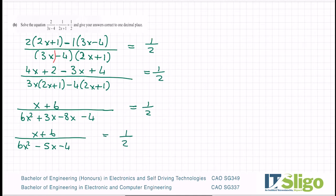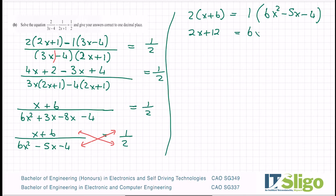So the left-hand side is in as simple form as it can get. So now I'm going to cross multiply. So cross multiplying means it's 2 by everything on the top this side. So it's 2 by the x plus 6 being equal to 1 times 6x squared minus 5x minus 4. So I have 2x plus 12 there equals to 6x squared minus 5x minus 4 there.